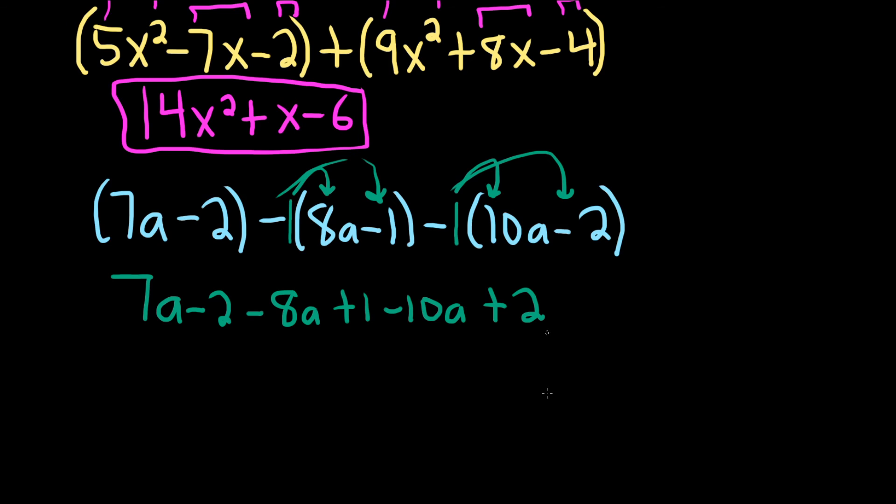All right. Good stuff. Now we can combine all of the a terms. So we have 7a minus 8a. That's going to give us negative 1a. But then we have a minus 10a, so negative 11a. Good stuff. And then these 2s go away, and we're left with a plus 1. And that should be the final answer.